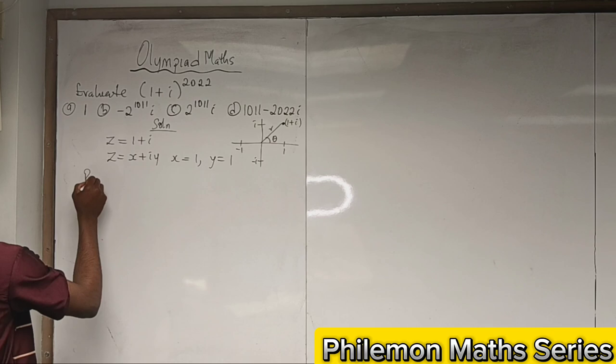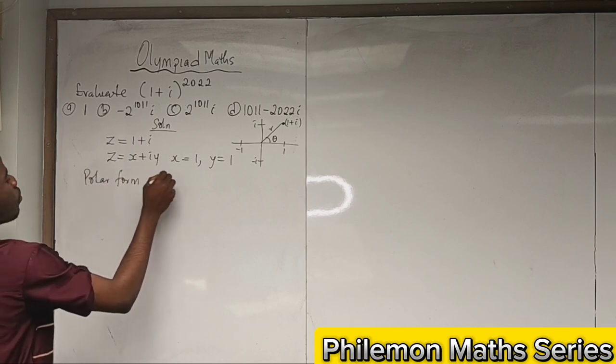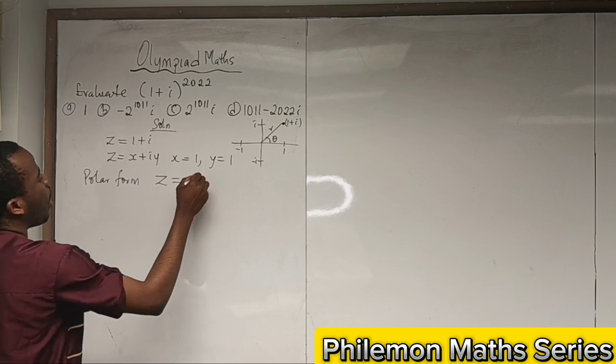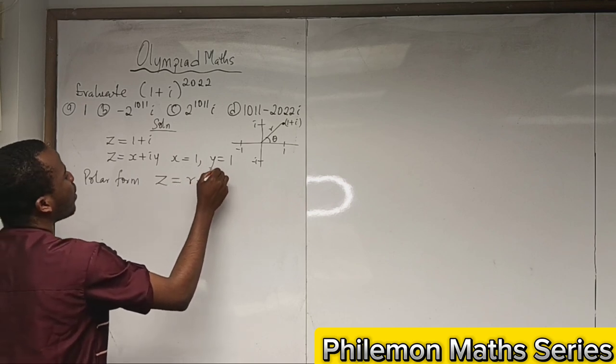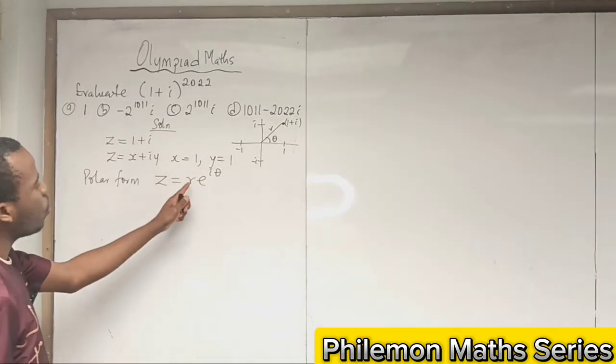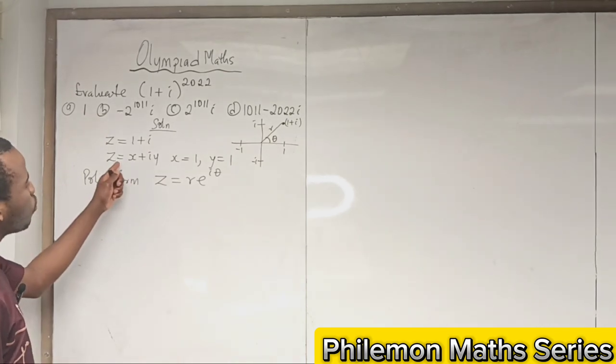So we are going to put this in polar form. Now putting z in polar form, this is equal to r*e^(iθ), where r is the modulus of z.